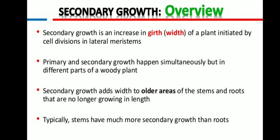First, we will see what is known by secondary growth. Secondary growth is defined as the increase in the diameter, girth, or width of a plant initiated by cell division in the lateral meristem. This lateral meristem is present at the lateral side inside the stem. There are primary and secondary growth which happen simultaneously but in different parts of woody plants, like woody angiosperms as well as gymnosperms.